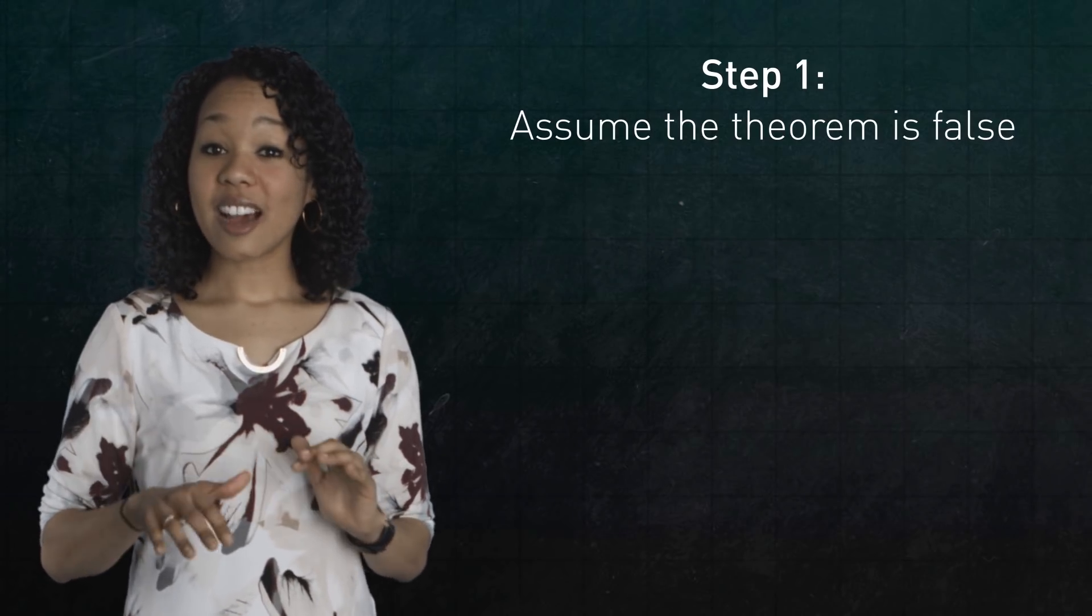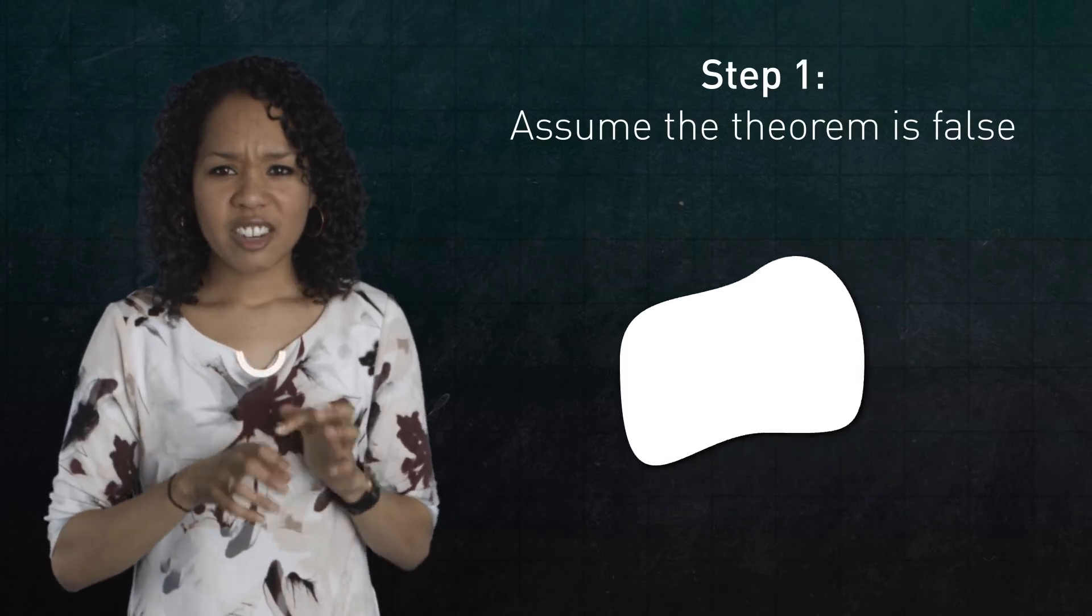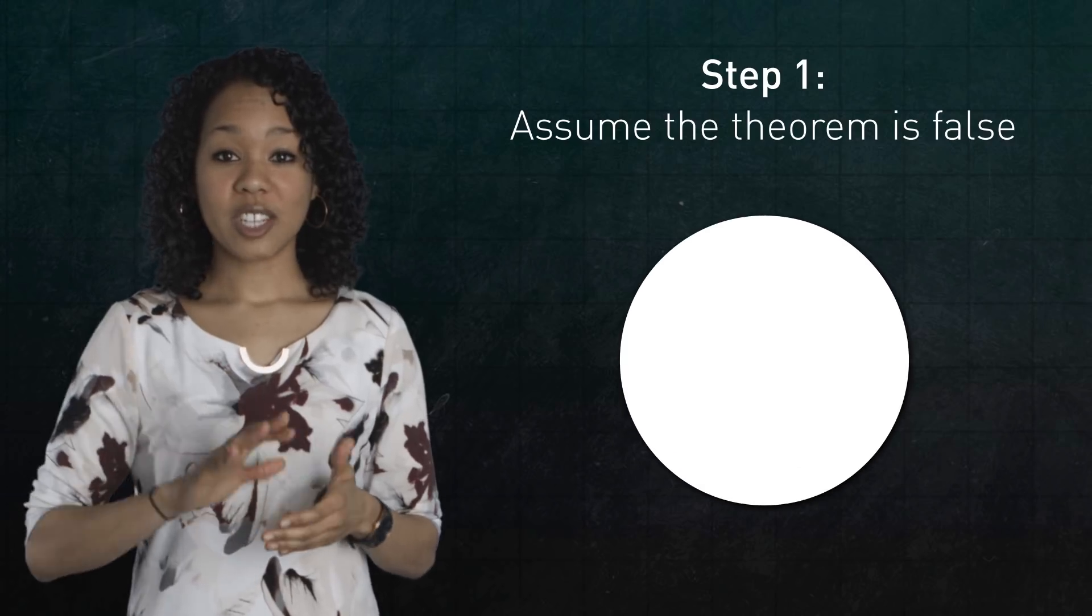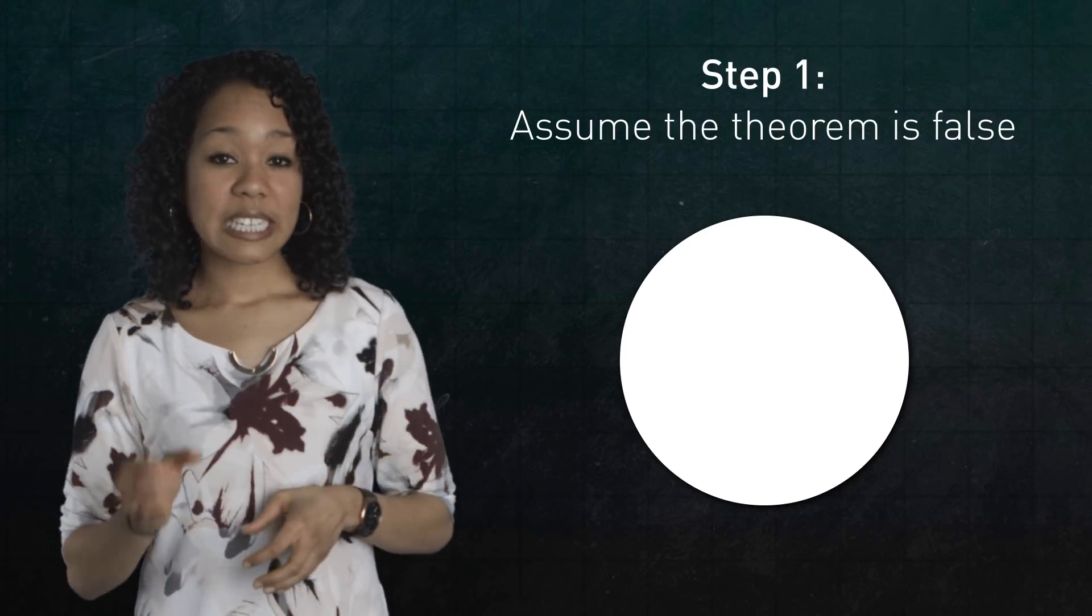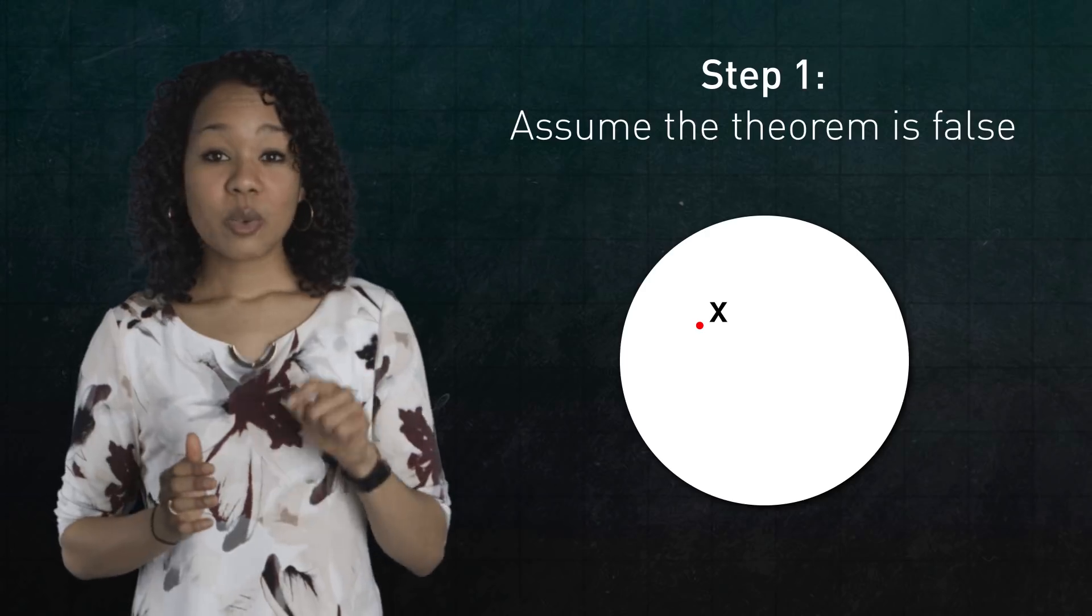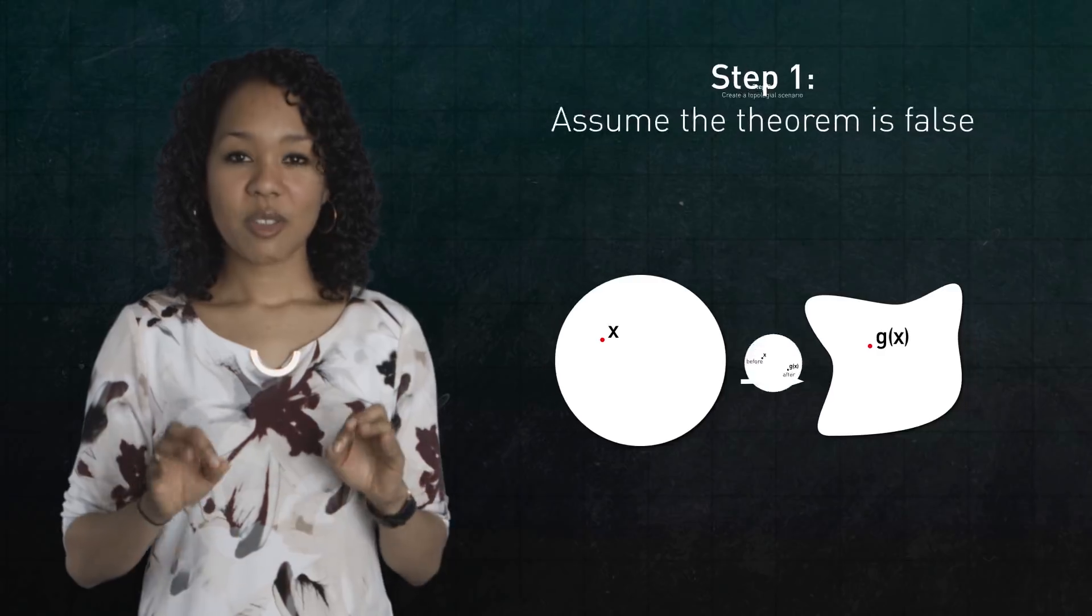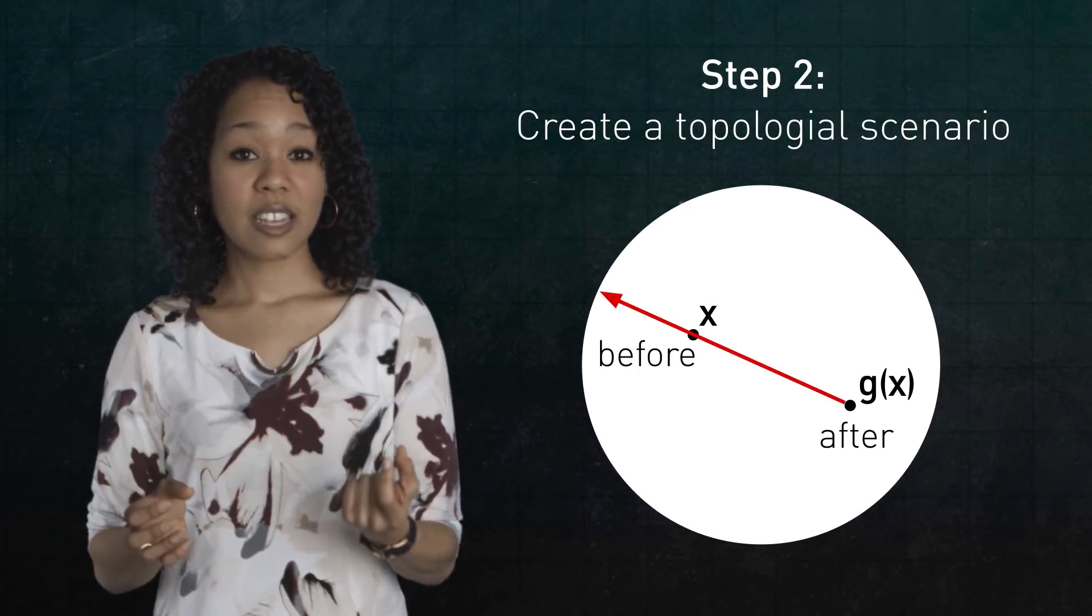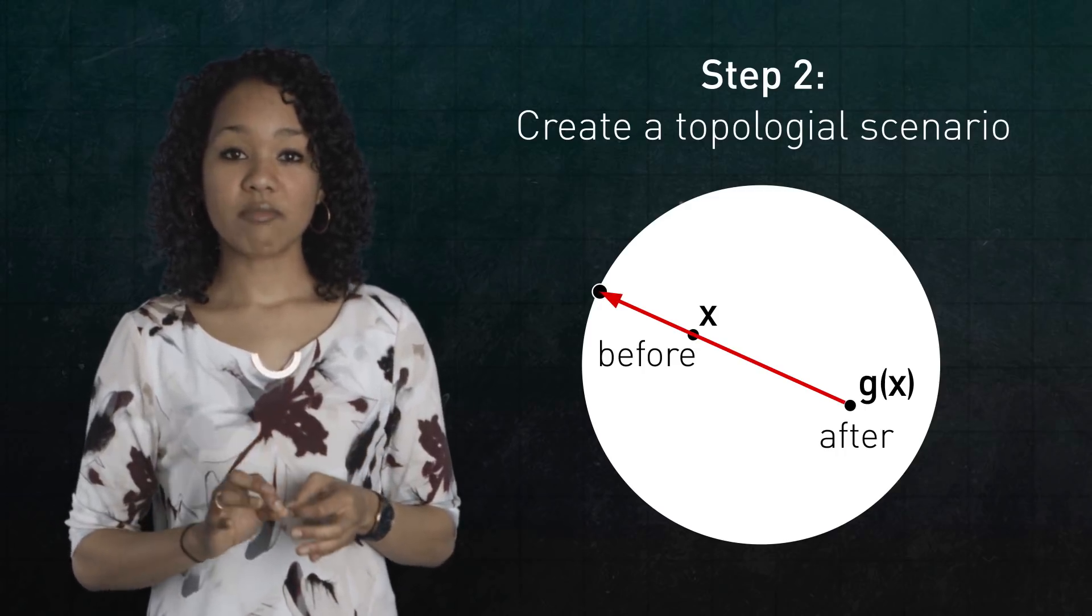Suppose Brouwer's fixed point theorem is not true. That means there's some transformation, some bending or stretching or twisting of the disk so that no point ends up where it was before the transformation. In other words, there is a continuous function g from the disk to itself so that any point in the disk x and the location of that point after the transformation g(x) are never the same. Therefore, we can draw an arrow from g(x) to x that touches a point on the outside circle. This assignment defines a new function. Let's call it h.